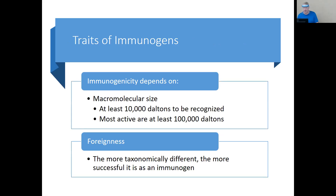Immunogenicity refers to how strong an immunogen or antigen is — we use those terms interchangeably. Not all antigens are immunogens, but all immunogens are antigens. All the antigens we get exposed to don't necessarily elicit a measurable immune response. An immunogen is an antigen with the capability to produce a body response. Size plays a big part: at least 10,000 Daltons is considered the minimum size, but most are active at 100,000 Daltons — the bigger the antigen, the more the body will respond.